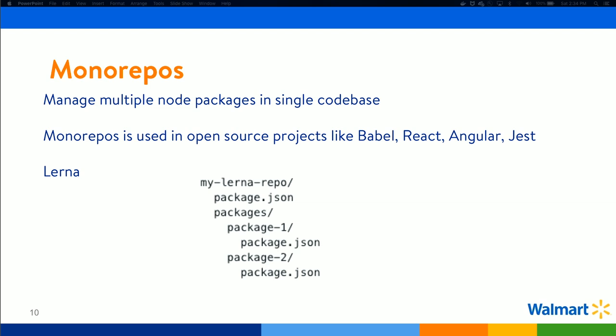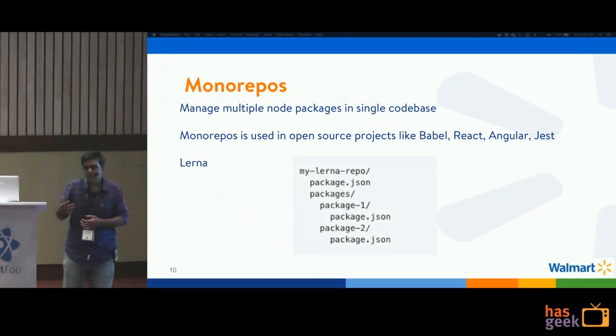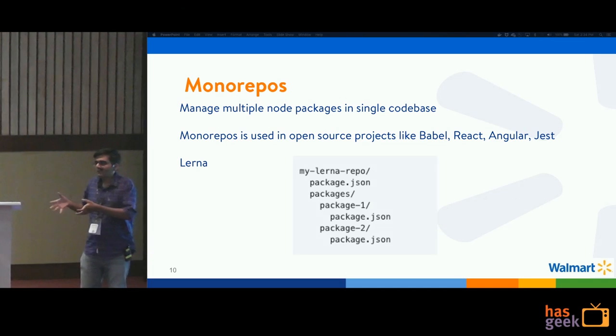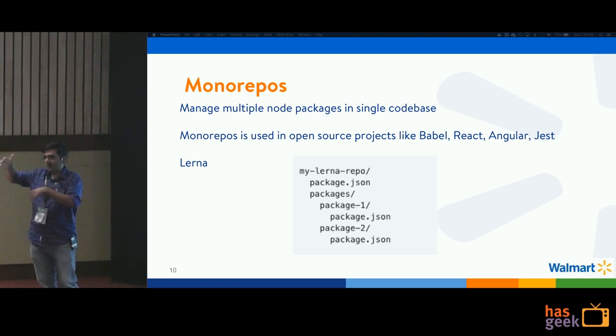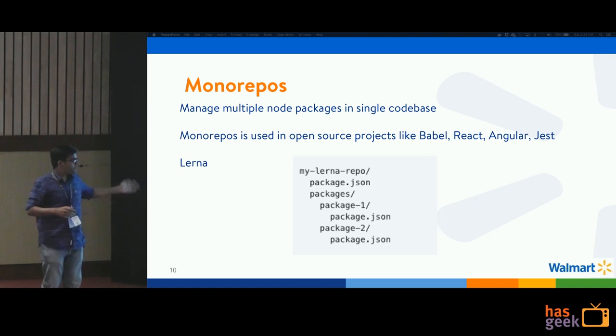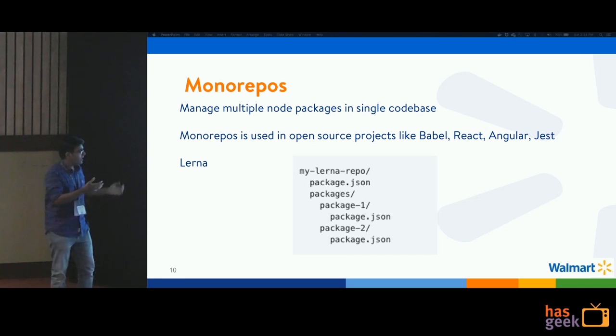There is a concept called Monorepos, where you develop these packages in a single codebase. It's not new — many open source projects use it, like React, Angular, or Jest. You can look at React's source code on GitHub to see how they do it. If you're using Yarn, it supports this via something called workspaces, where you can have multiple workspaces and develop these packages. We used something called Lerna because we were using the npm client.